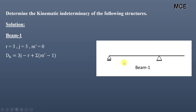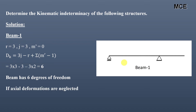Putting the values of r, j, and m′ into the equation, we get dk = 6. This means the beam has six degrees of freedom. If axial deformations are neglected, this beam has one member, so dk = 6 − 1 = 5.